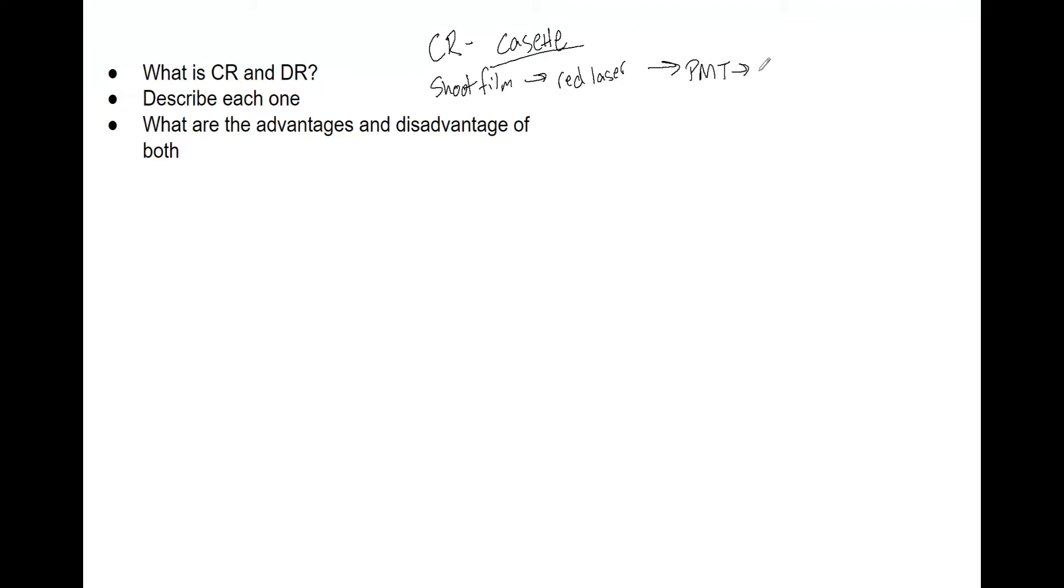This is then digitized, and those essentially just take the values and put them in the pixel values. And then that CR plate is cleared, and you can reuse that again. And that is cleared with white light.